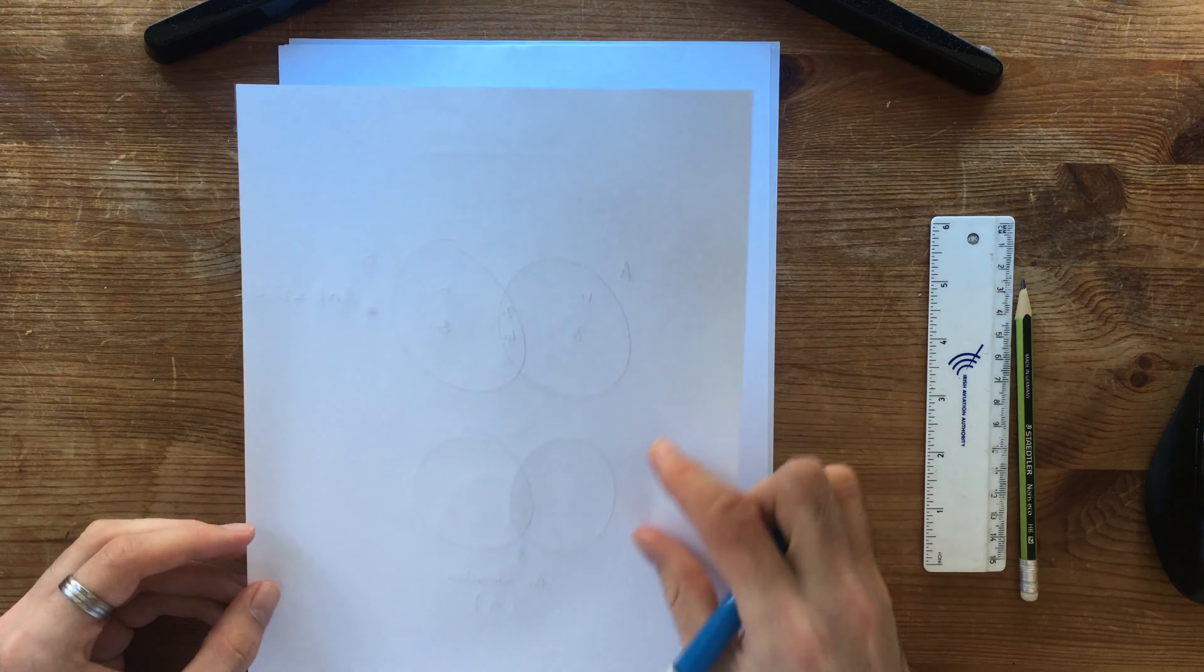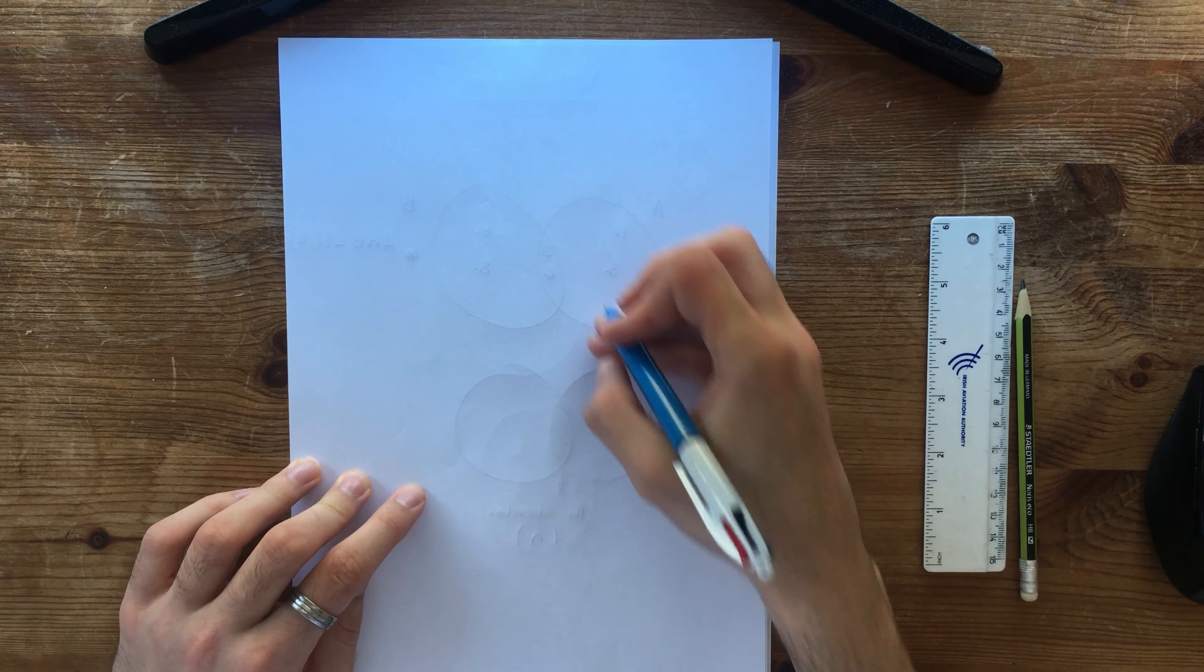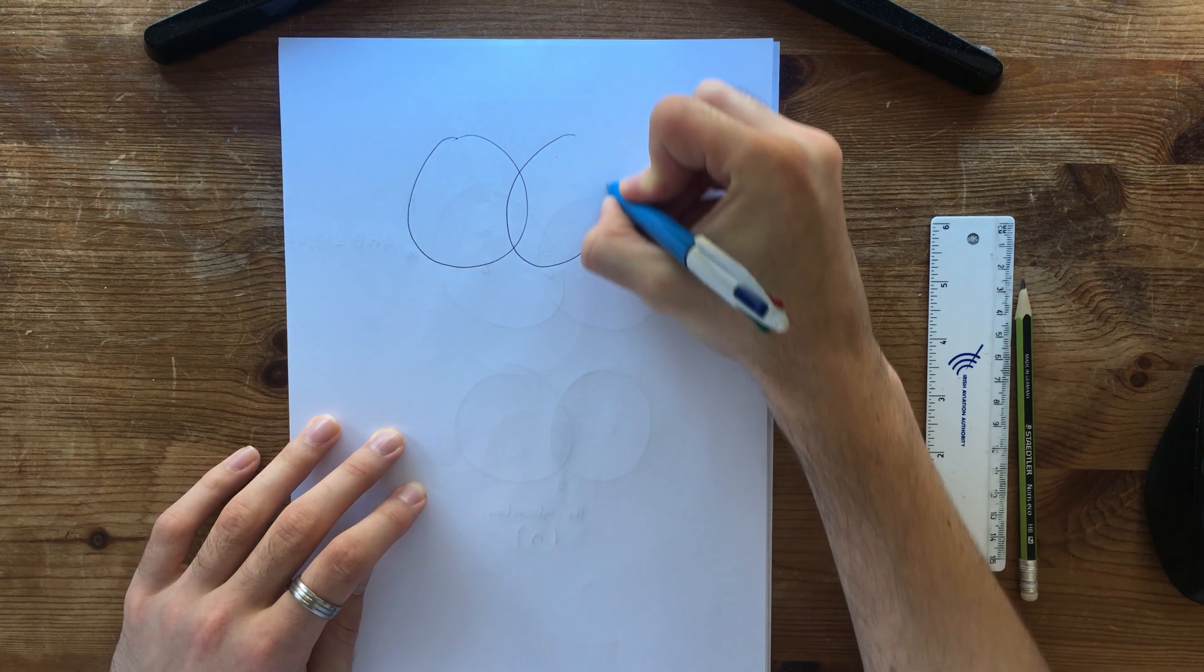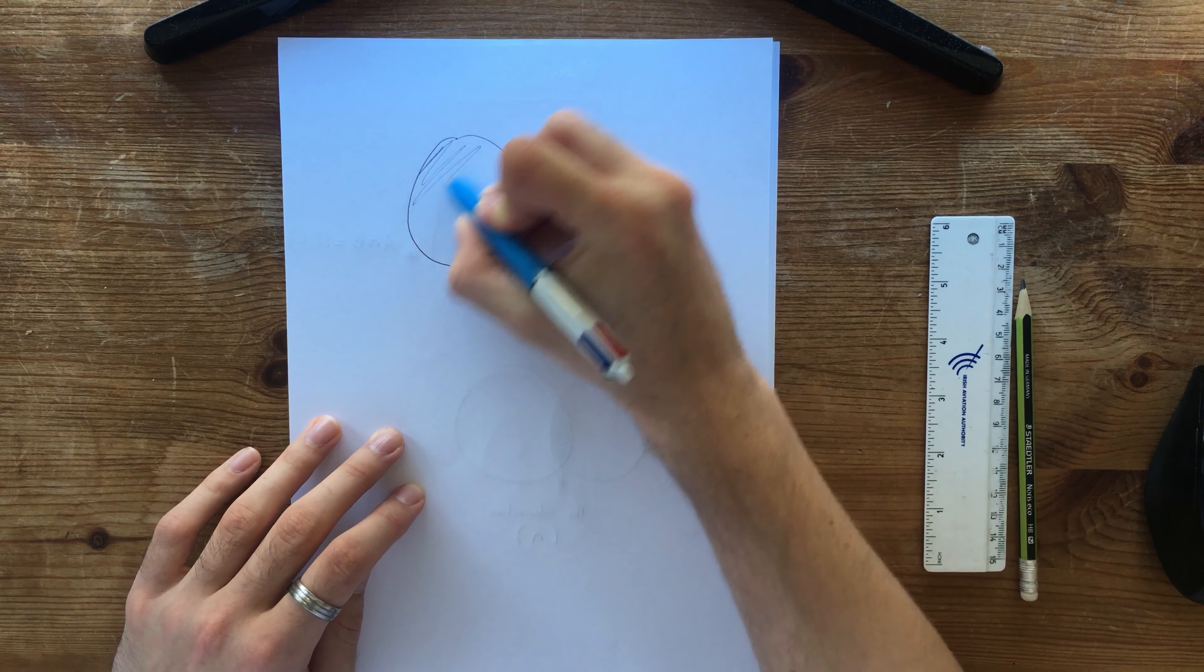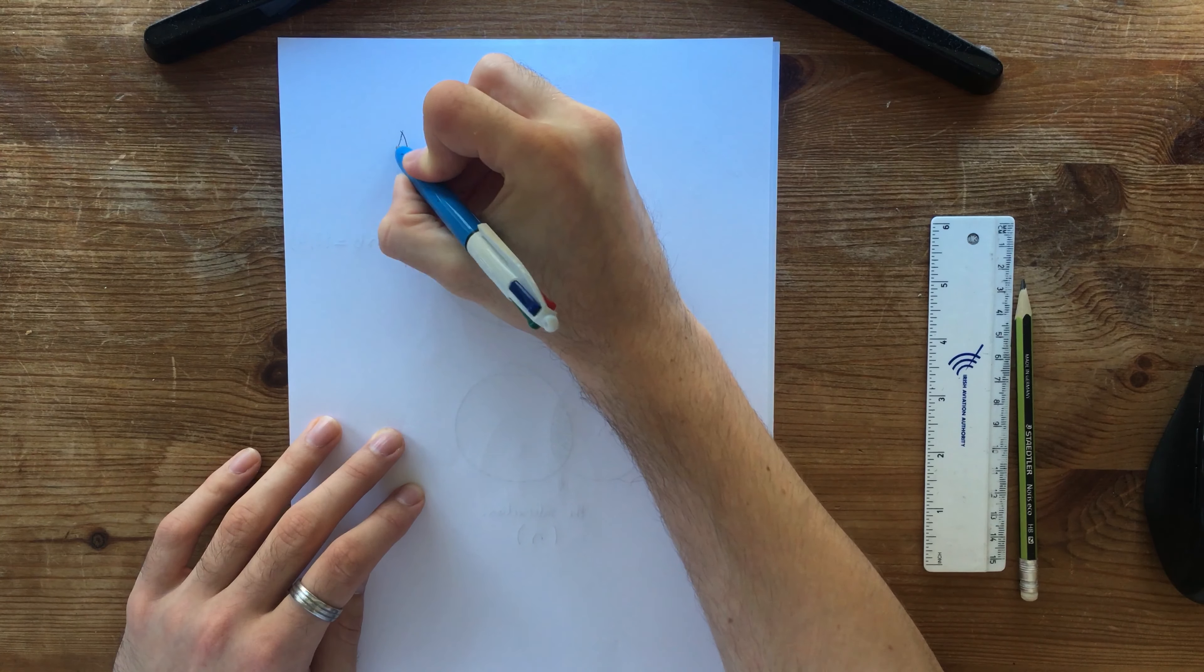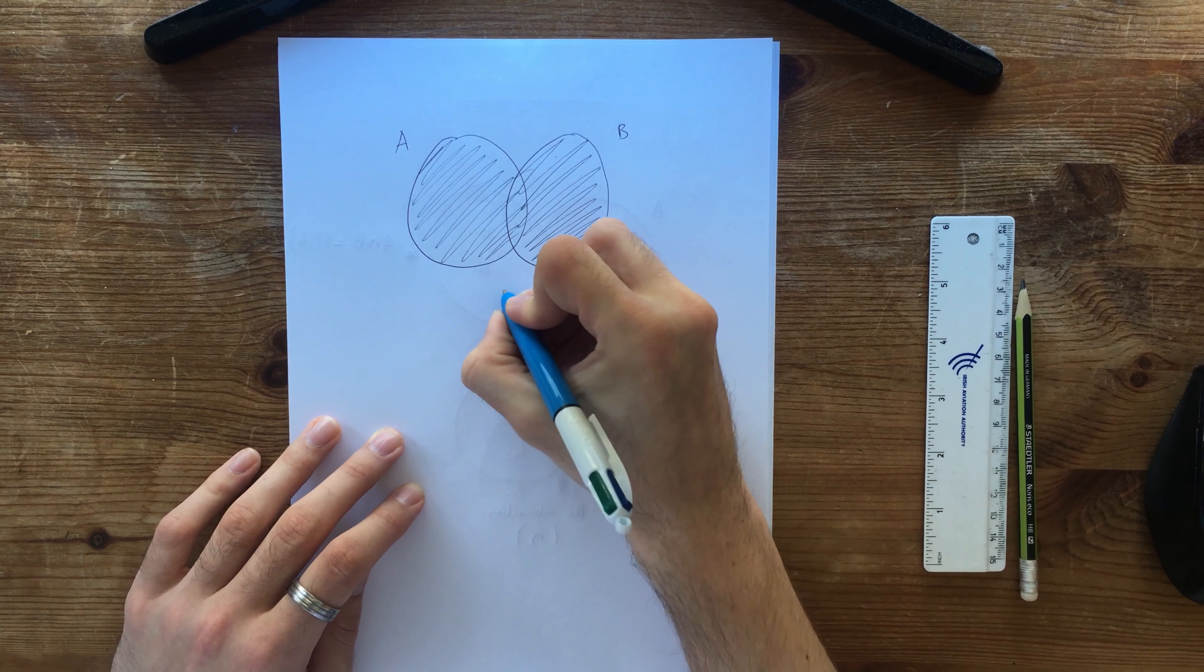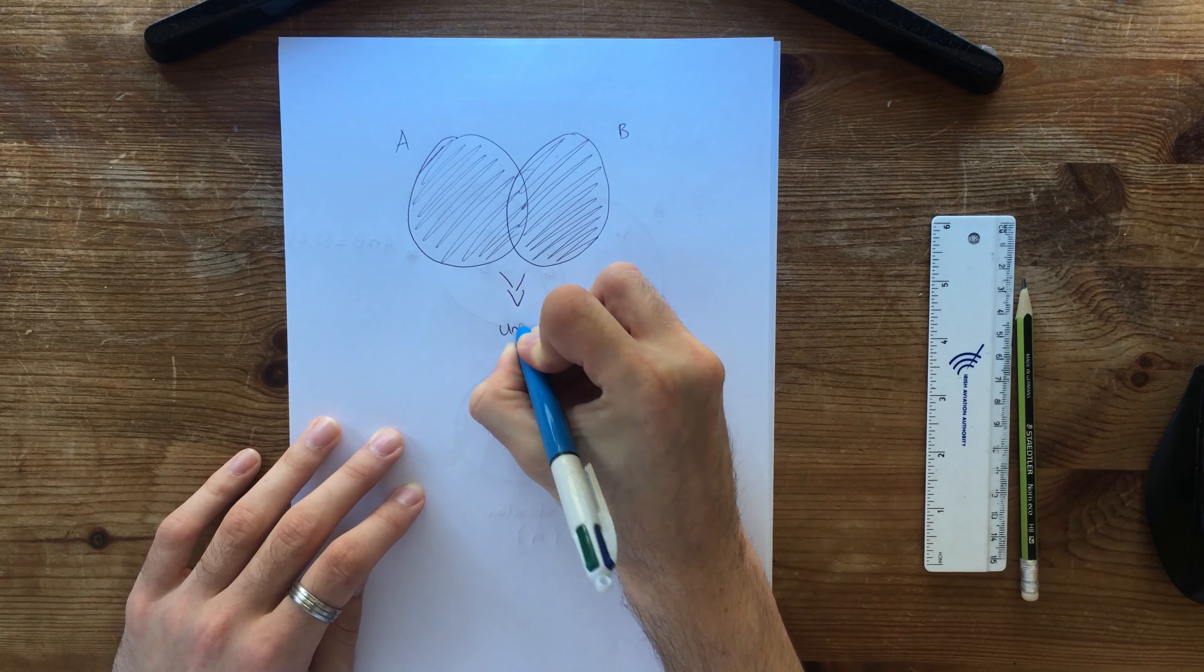Now let's take a look at another one called the union. So the union, if we take this and we take another one that goes into it, the union is going to be everything that's in here, we call this A, and everything that's in here. And we call this B.